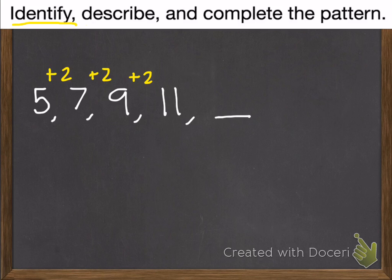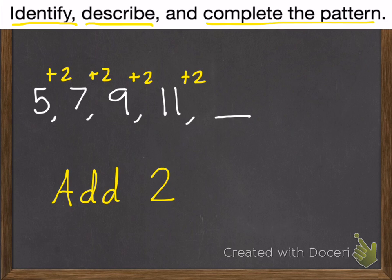So if we were to describe this pattern, we would describe it as each time they add 2. And then last, we need to complete the pattern. So if we continue the pattern of add 2 to 11, we will get 13. And that is example number 1.